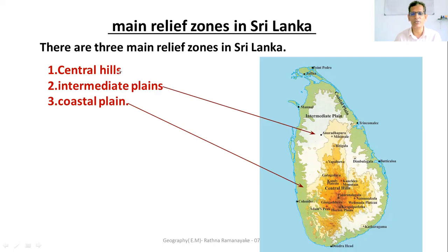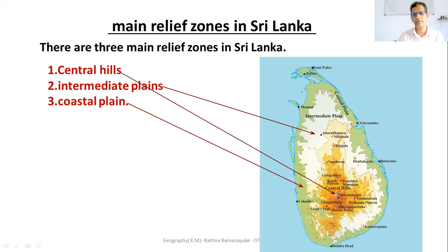Central Hills — you can see in brown colour here. Land areas over 300 metres from the sea level belong to Central Hills.